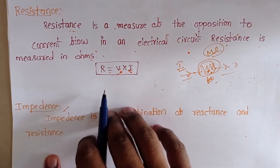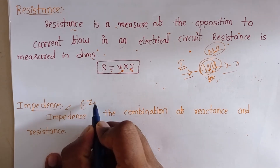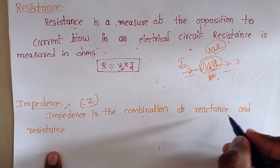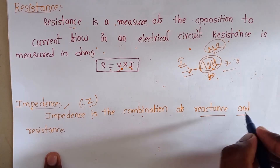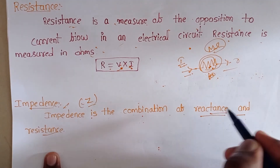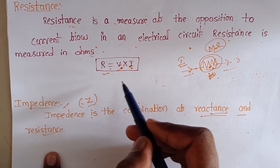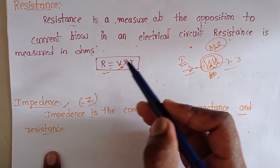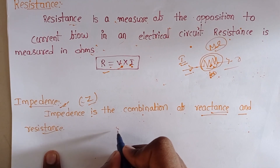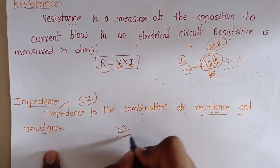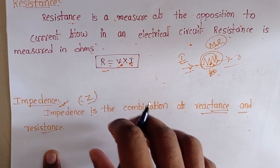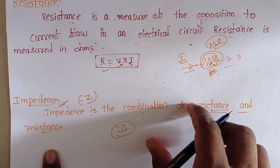Impedance is denoted by the letter Z. Impedance is the combination of reactance and resistance — the combination of both reactance and resistance is nothing but impedance. The units of impedance are also ohms. This is about reactance, resistance and impedance. Thank you for watching this video.